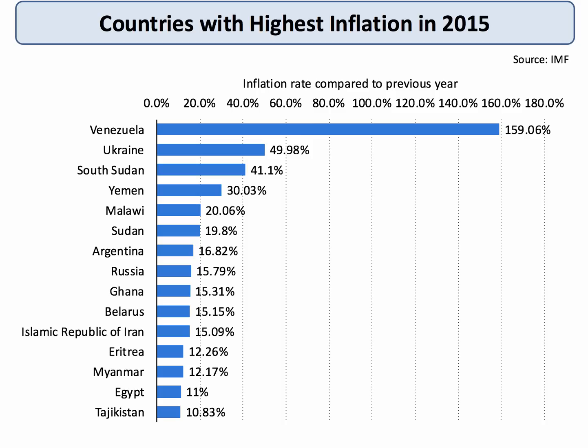Here are some countries where inflation is undoubtedly an issue. All of these nations have inflation of more than 10% in 2015. The outlier is the troubled, crisis-ridden economy of Venezuela with inflation of nearly 160%. Ukraine will be well out ahead with inflation of 50% — and that looks small in comparison. Clearly, these countries must face up to some of the economic costs and consequences of high inflation.